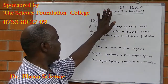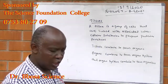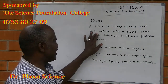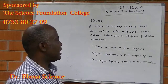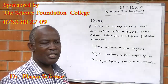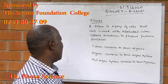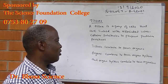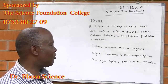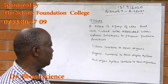Today, 13th September 2020, we are going to look at tissues. A tissue is a group of cells that are linked with associated intercellular substance to perform a particular function. Tissues combine to form organs. Organs combine to form organ systems. And the organ systems combine to form an organism.